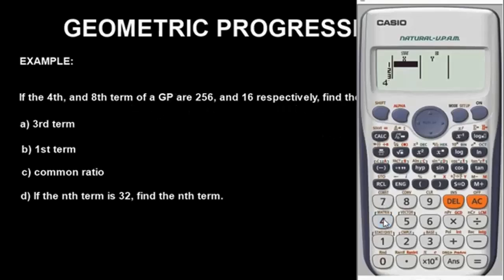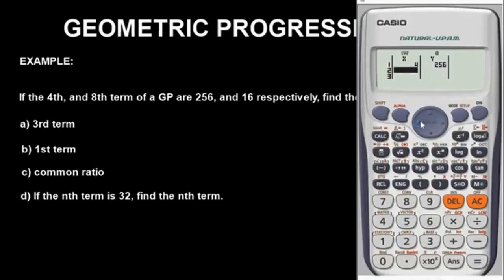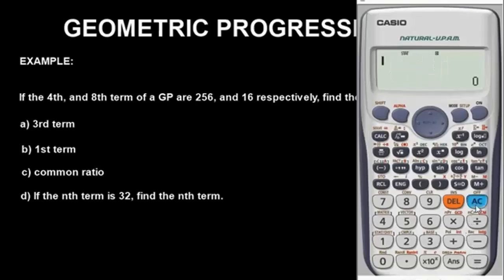Let's begin with the fourth term — the fourth term there is 256. So once you input 4 for X, you go back to Y and put 256. Then go back to X and input the next term, which is the 8th term. The 8th term is 16, so you go to Y and put 16. Note that as you are inputting the values, they are being stored in the calculator automatically. Once you are done, you wipe out these values, knowing that they are already stored.